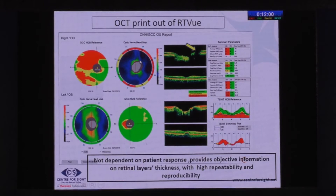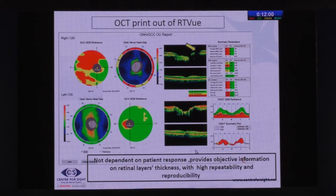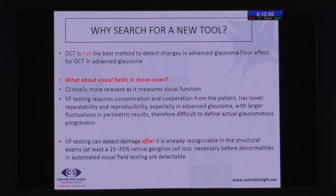We love to see whether there are corresponding features, but we also know that there are certain areas we need to look at. For example, looking at the left eye, we find it is practically normal, and we examine inter-eye asymmetry to see which eye is more defective. Importantly, OCT is not dependent upon the patient's response, so for patients unable to perform perimetry it becomes a key follow-up tool. It provides highly objective, repeatable, and reproducible information on retinal layer thicknesses.